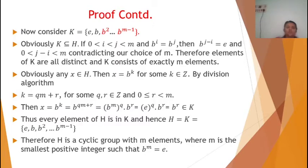Now choose any x in H. Then x equals b raised to k for some integer k. By the division algorithm, k equals qm plus r for some integers q and r with 0 ≤ r < m. Then x equals b raised to k equals b raised to (qm + r), which equals (b raised to m) all to the power q times b raised to r, which equals e^q times b raised to r, which equals b raised to r. This is an element of K. Thus every element of H is in K, so H equals K = {e, b, b², ..., b^(m−1)}.